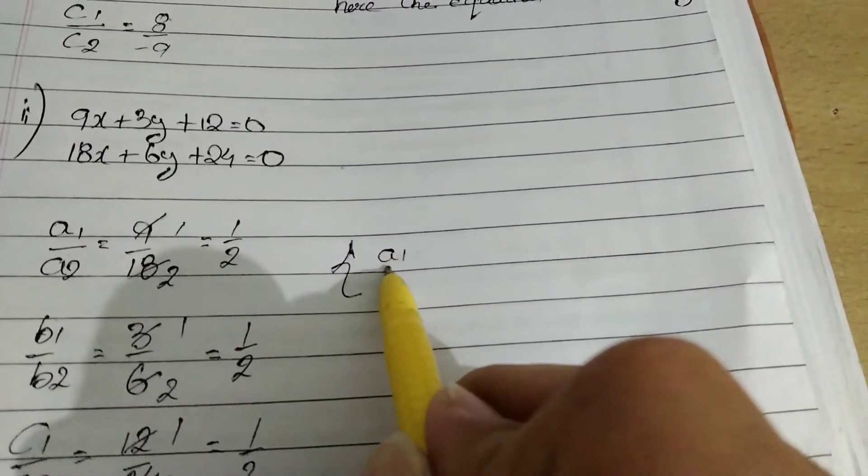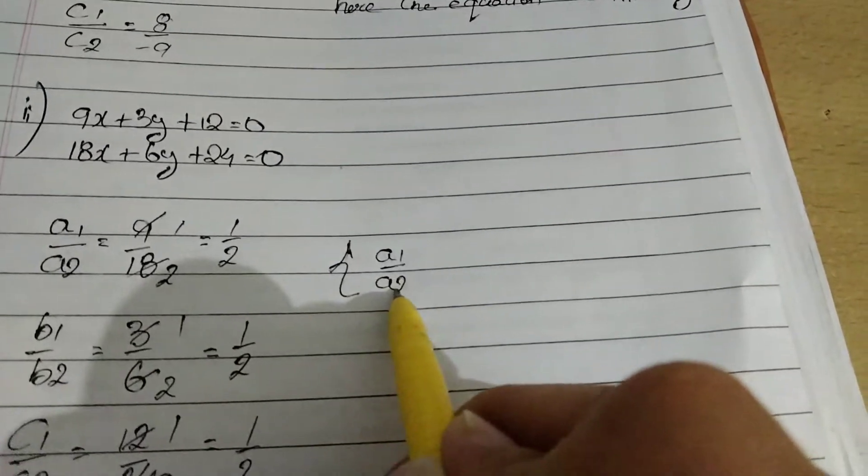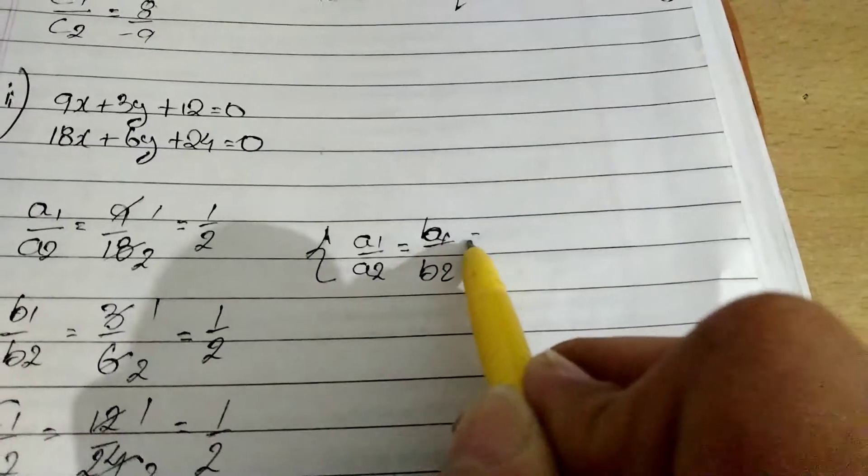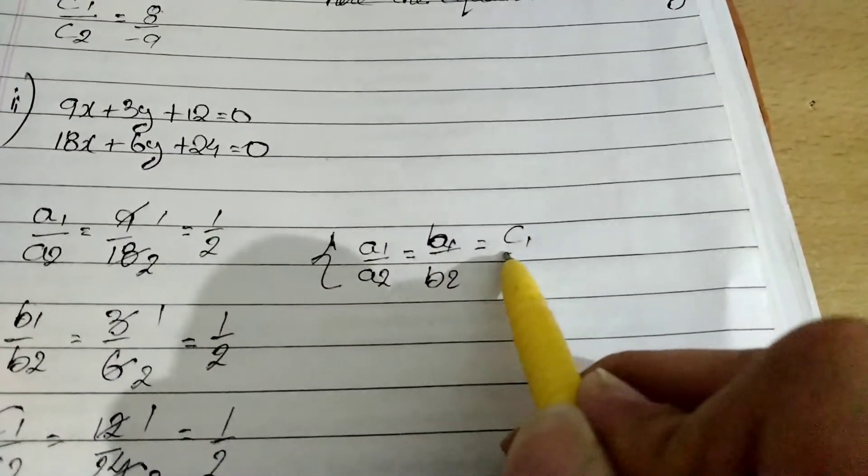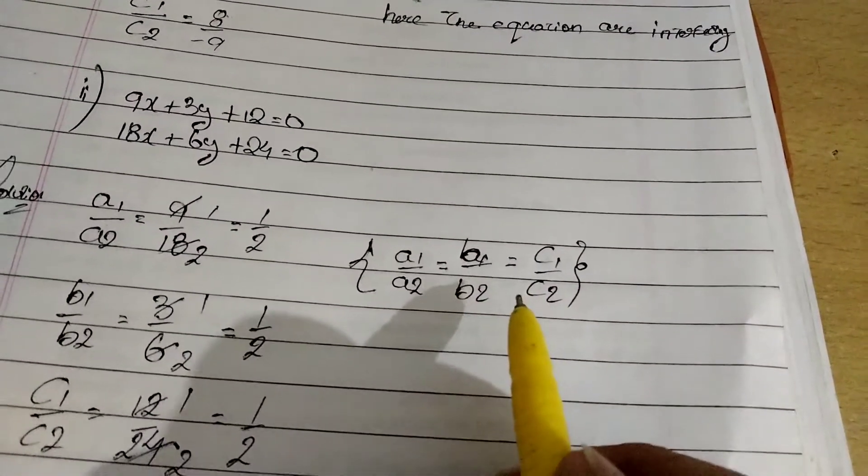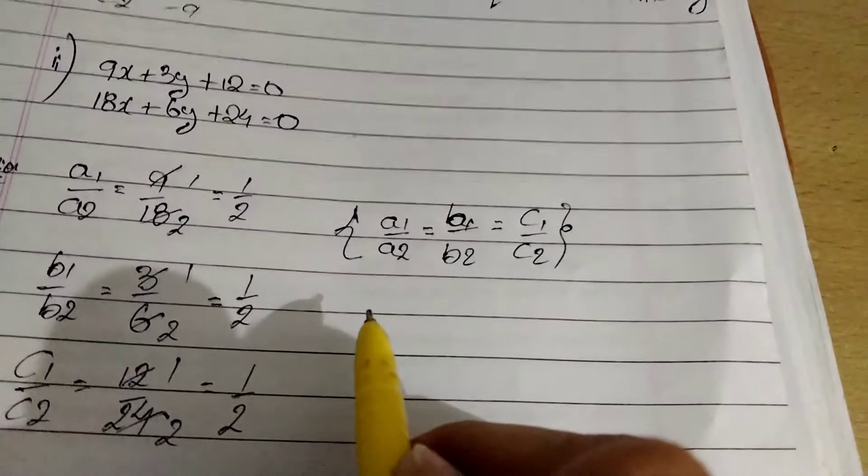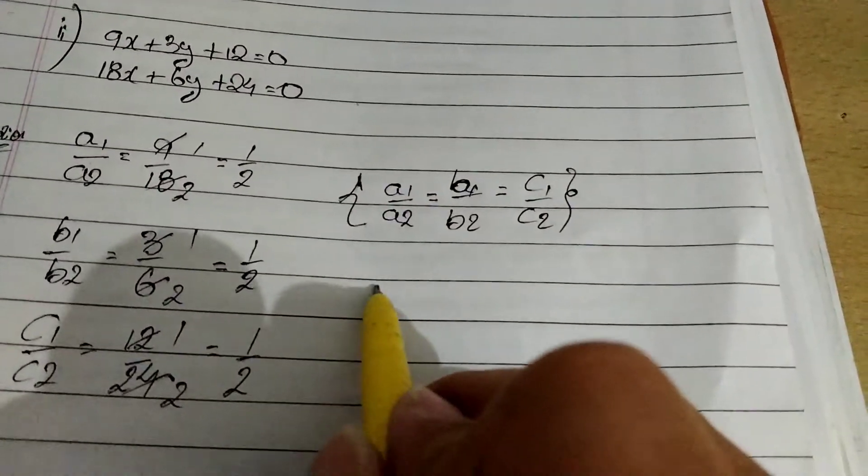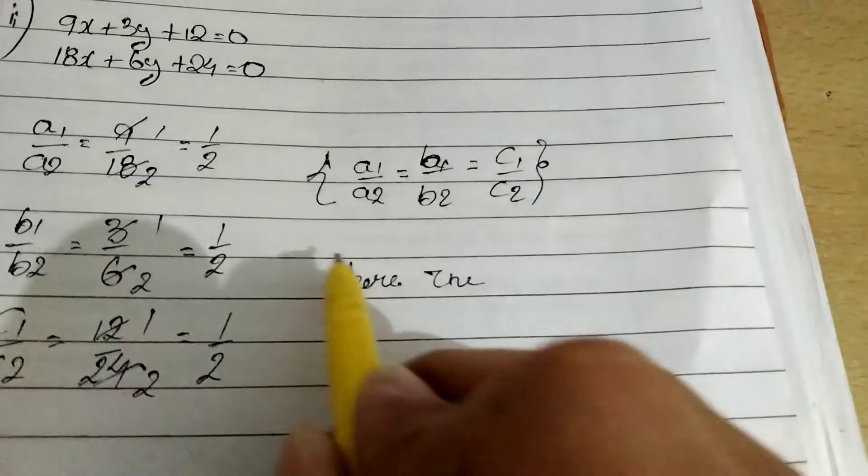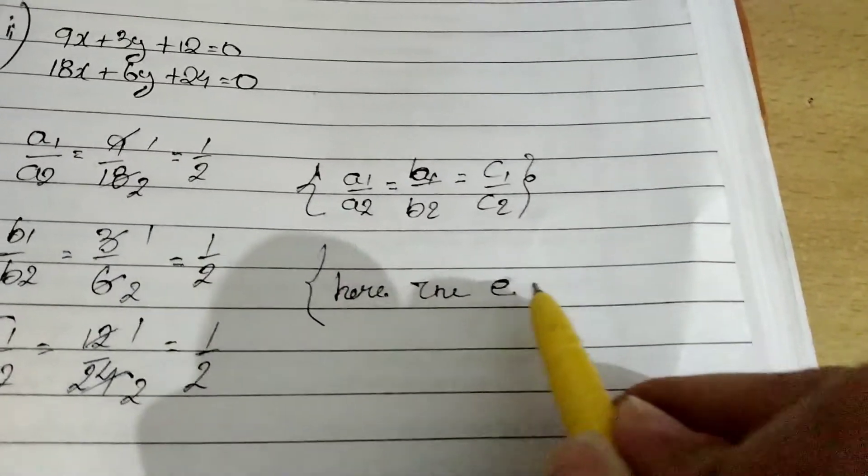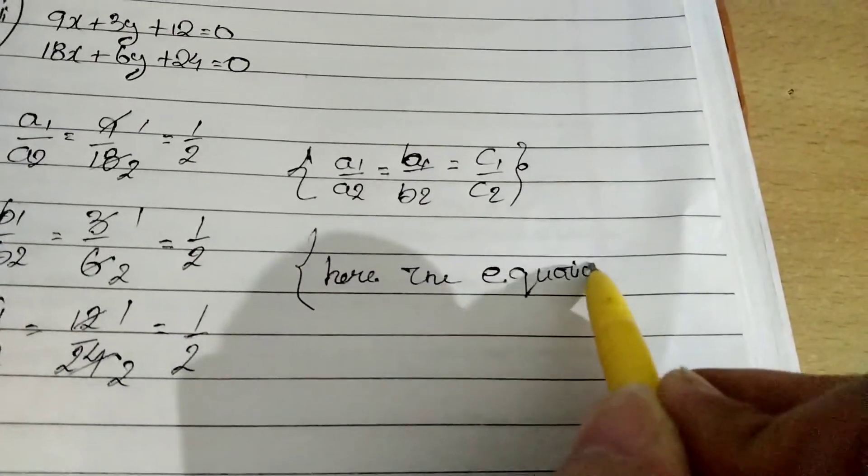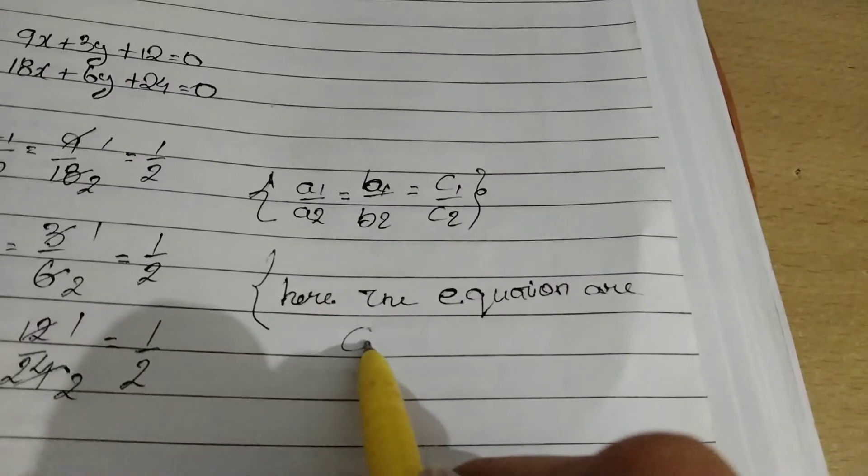So all of them are similar equal. Let me show you. Here A1 by A2 equal to B1 by B2 equal to C1 by C2. This means that they are coincident. If you remember the formula which I have shown to you.